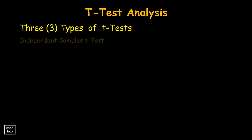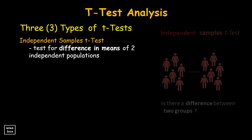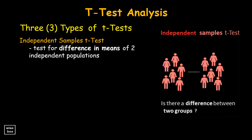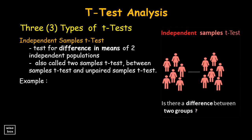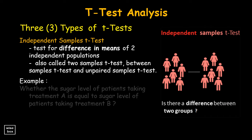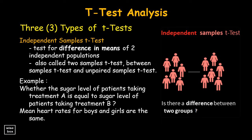Next, the independent samples t-test is a test for difference in means of two independent populations. It is also called two-samples t-test, between samples t-test, and unpaired samples t-test. Examples include: whether the sugar level of patients taking treatment A is equal to sugar level of patients taking treatment B, and whether mean heart rates for boys and girls are the same.